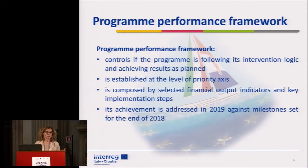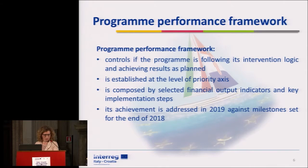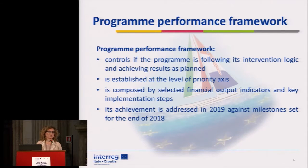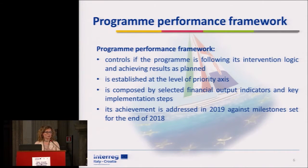For example, one indicator is a financial one, which shows the financial amount of ERDF expected to be used by 2018 or 2023. Then there are some chosen output indicators which refer to a particular priority axis, such as the number of research institutions participating in research projects, or climate change monitoring systems put in place. Those are the kinds of indicators which are in the performance framework.